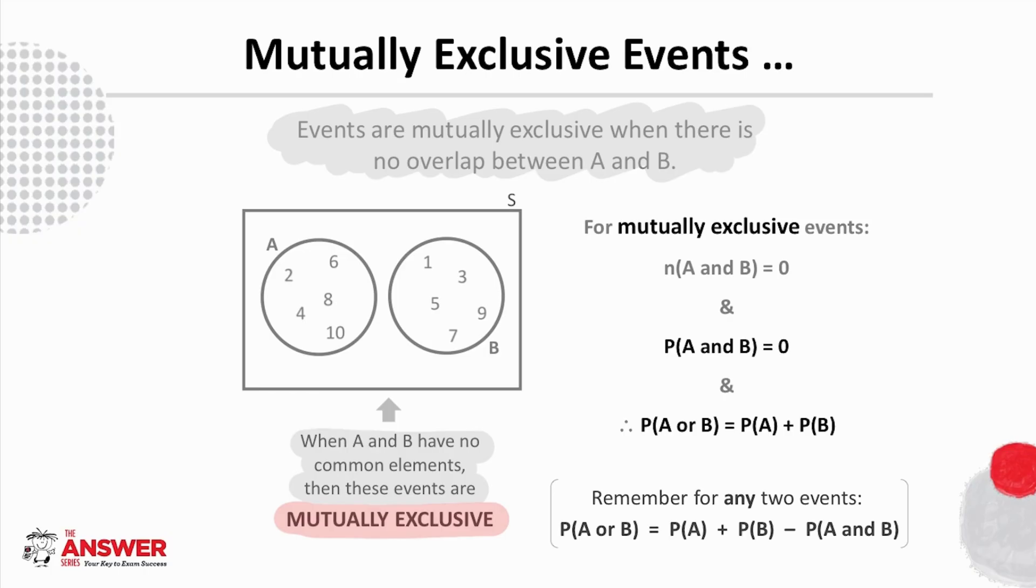So if we follow this logic, we can see the following to be true. For mutually exclusive events, the number of elements in the intersection of A and B is 0, which means the probability of A and B is then 0.